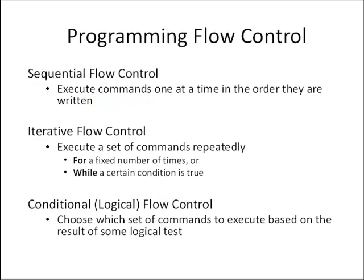Let's talk about programming flow control. All along in this class to date, you've been writing computer programs — either script M files or function M files — that use sequential flow control. What that means is that the commands in your code have just been executed one at a time in the order that they are written in the M file. There are other types of flow control for more sophisticated problem solving or numerical techniques.